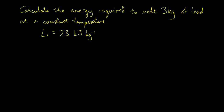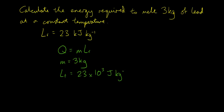Let's try an example. Calculate the energy required to melt three kilograms of lead at a constant temperature. We've been given the specific latent heat of fusion for lead as 23 kilojoules per kilogram. Writing out Q = mL: m = 3 kg and L_f = 23 × 10³ J/kg in SI units. So Q = 3 × 23 × 10³ = 6.9 × 10⁴ joules.